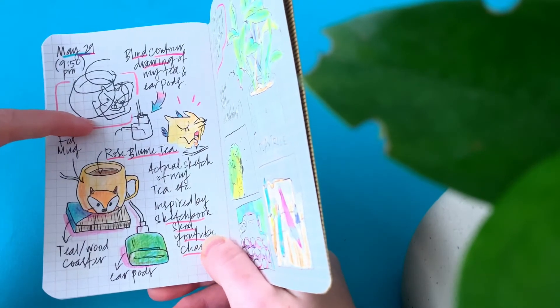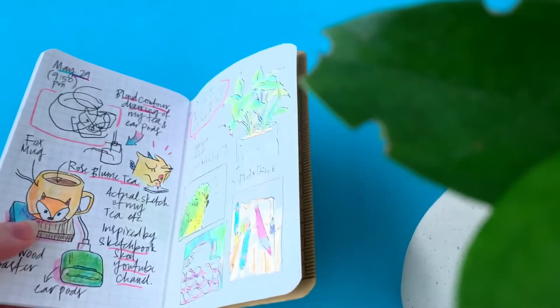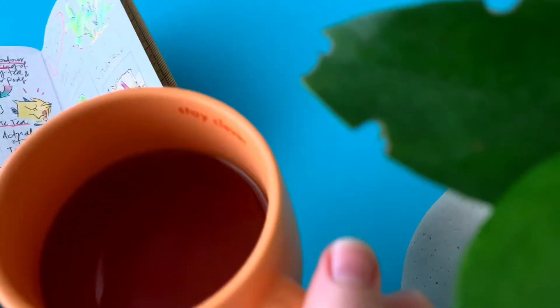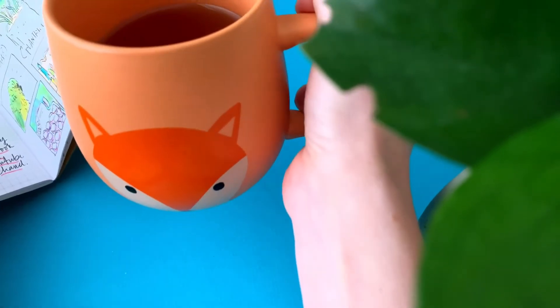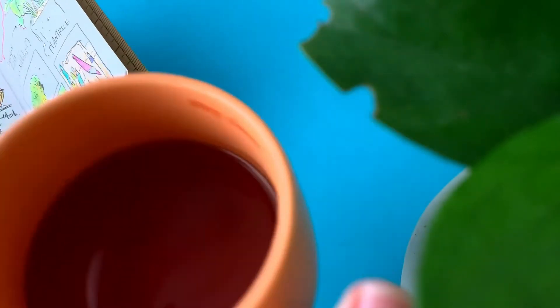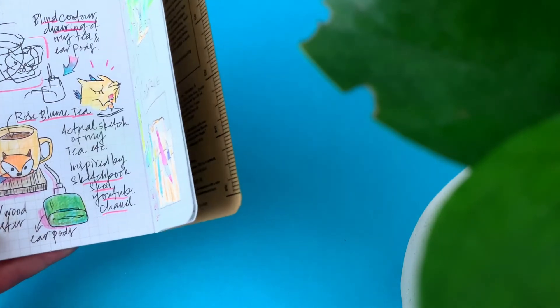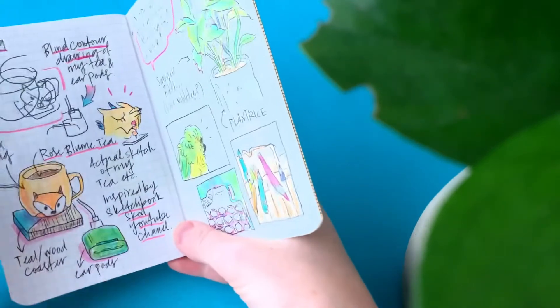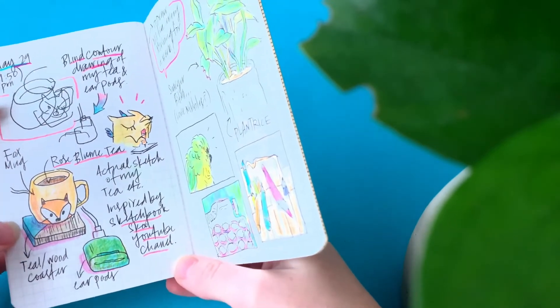So this was a blind contour drawing of my mug. Actually I have my mug right here let's see if I can show it to you. Yeah, pretty cool. So I love this mug. And yeah so I drew it blind contour first so it's just scribbles and then I drew like an actual drawing of it.